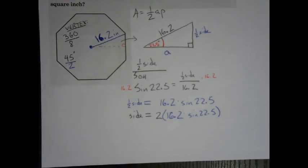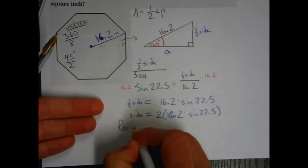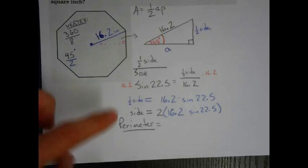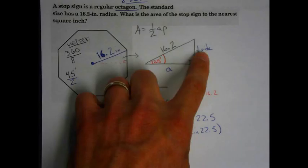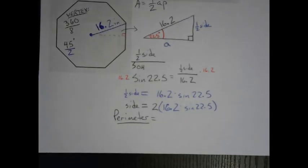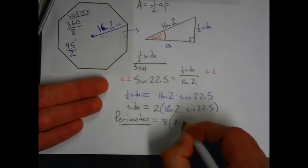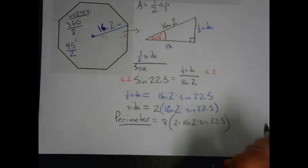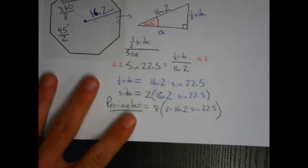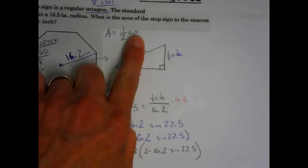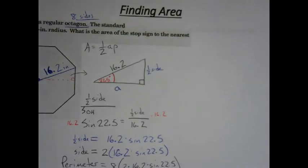What does that mean for the entire side? One full side is going to be 2 times 16.2 times the sine of 22.5. Do not get lost in the numbers — follow the concept. We have our half side, which gives us the whole side, and the whole side gives us the perimeter. Perimeter is found by multiplying by eight. So the perimeter is 8 times 2 times 16.2 times the sine of 22.5. We found the perimeter. Now what we need is our apothem.